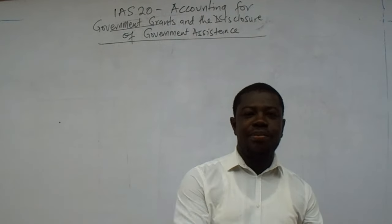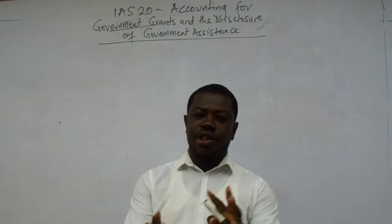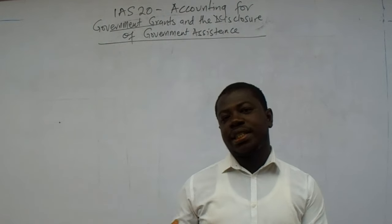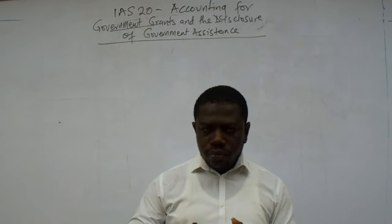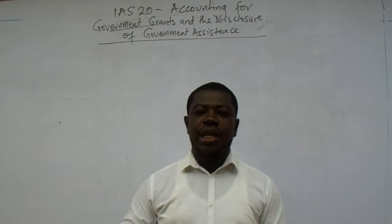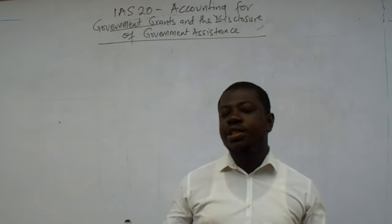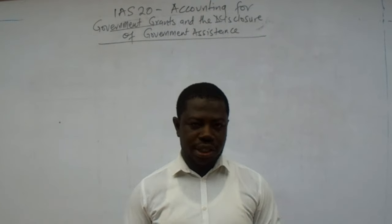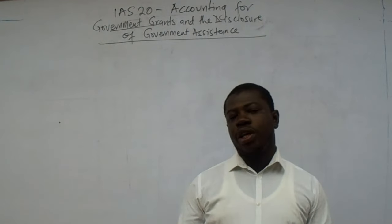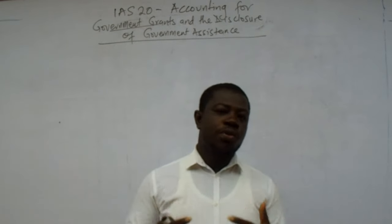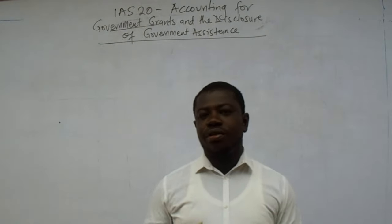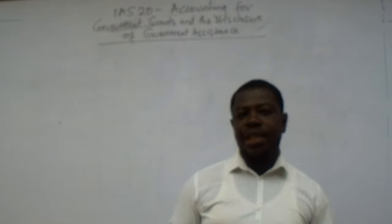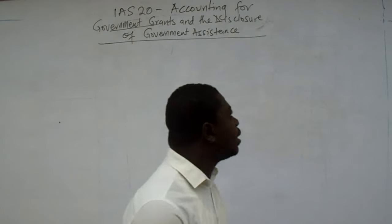Accounting for Government Grants means that when it's a grant you account for it, but when it's an assistance, what you do is that you only disclose at the end of a financial statement. So we begin by trying to understand some of the key terms in the standard.